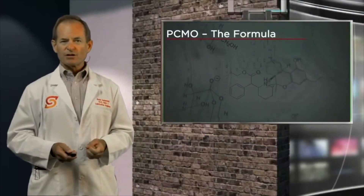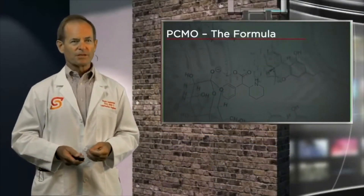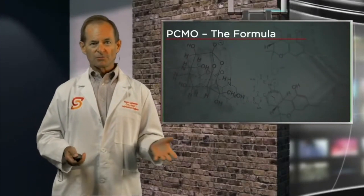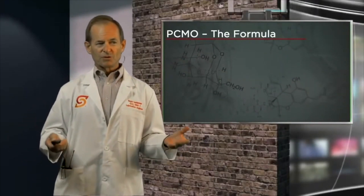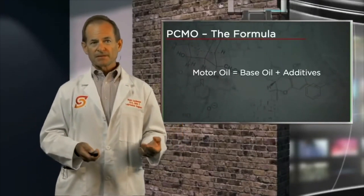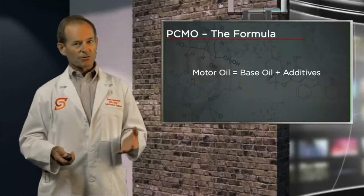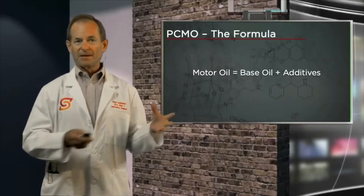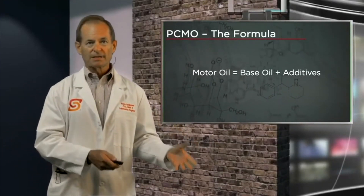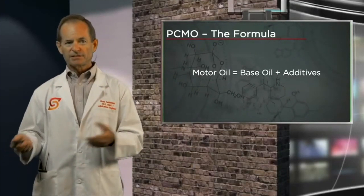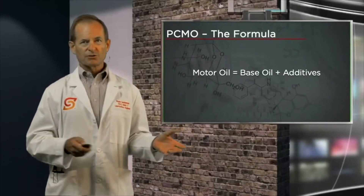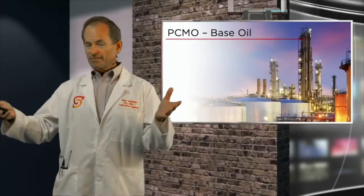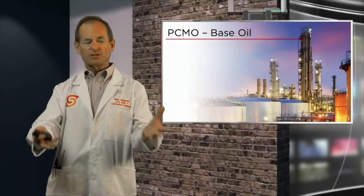I usually start off talking about a formula — this is the 101 of lubricants. All lubricants are made to the same basic formula. In this case, our motor oil. Motor oil is made up of base oil plus additives. Base oil is the wet and slippery stuff.